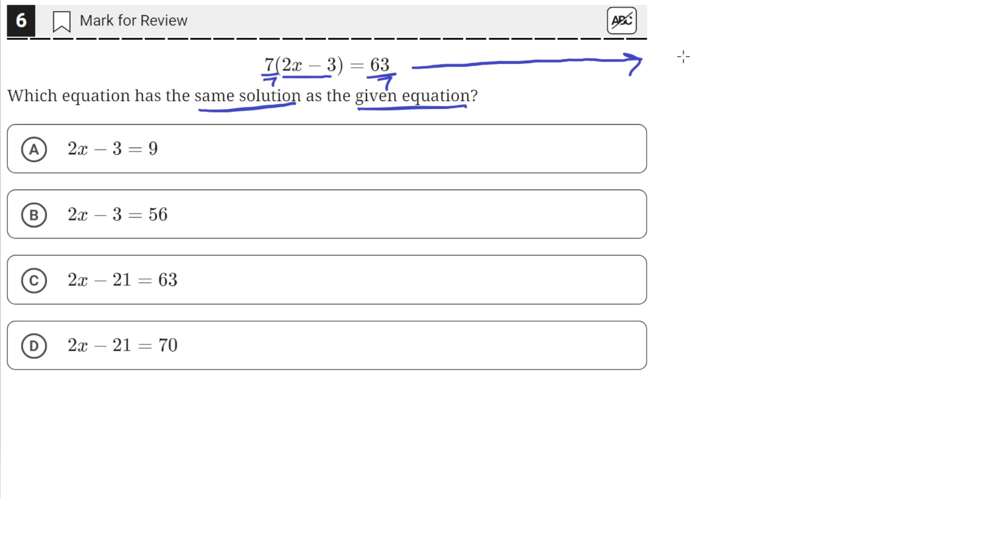So when we divide both sides by 7, we'll be left with 2x minus 3 on the left, and on the right, 63 divided by 7 is just equal to 9.